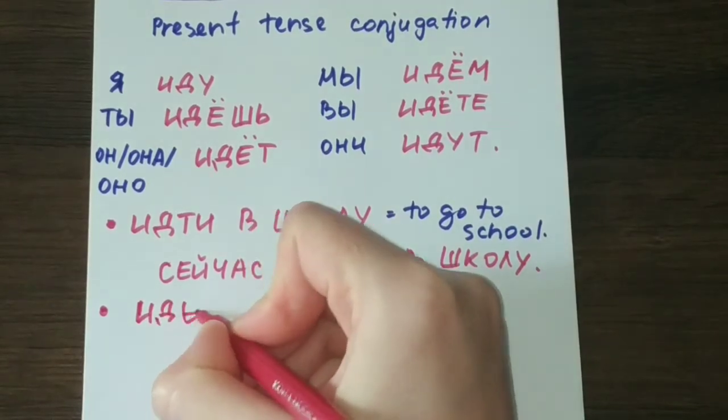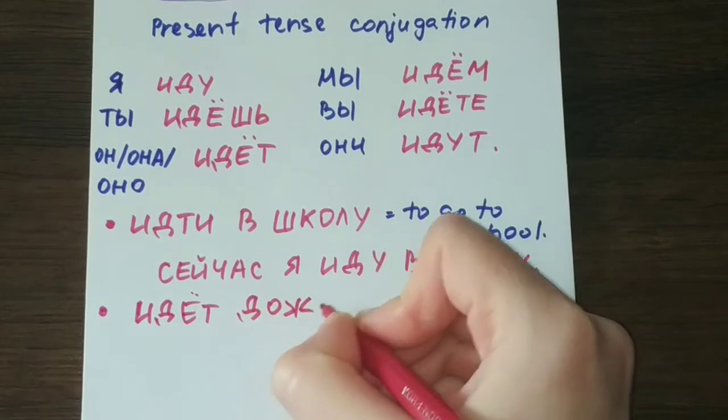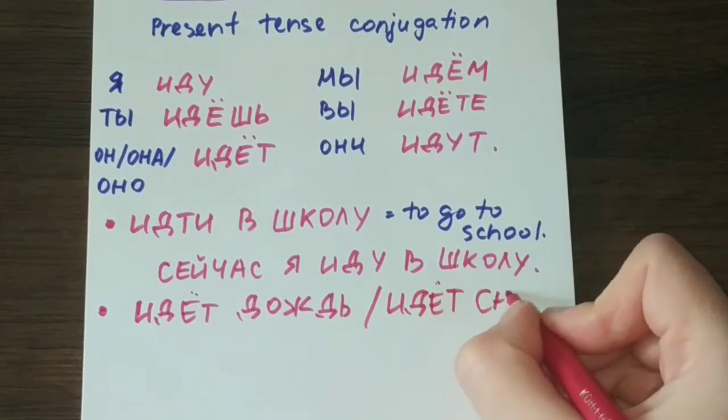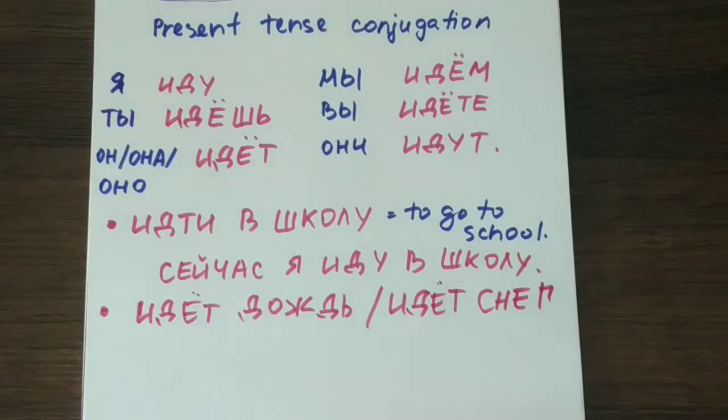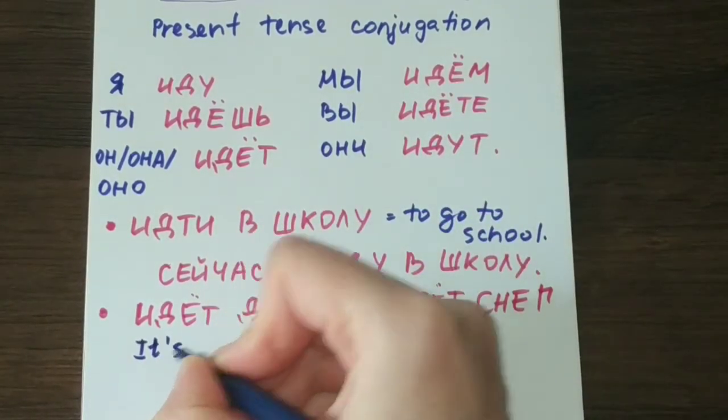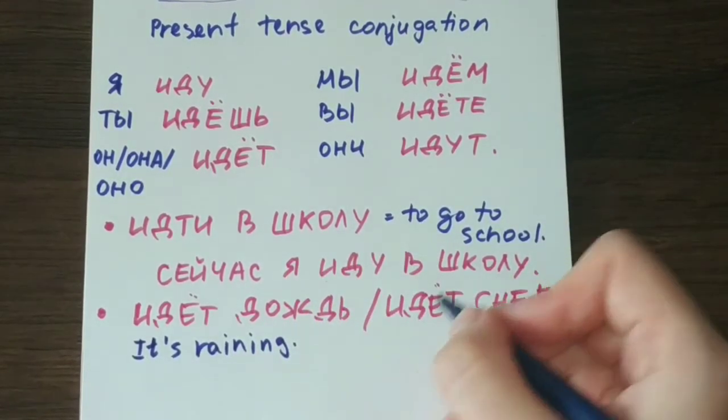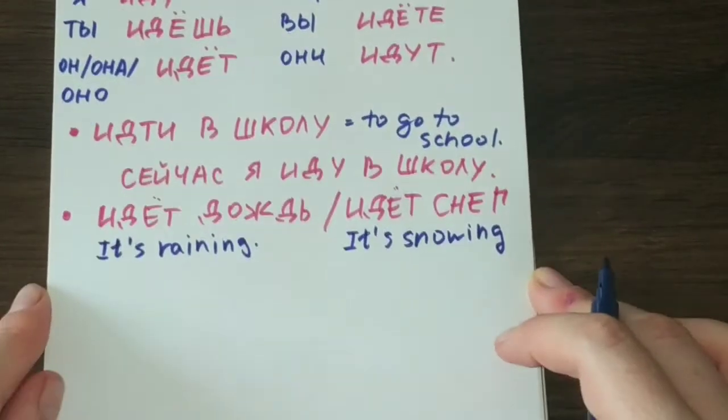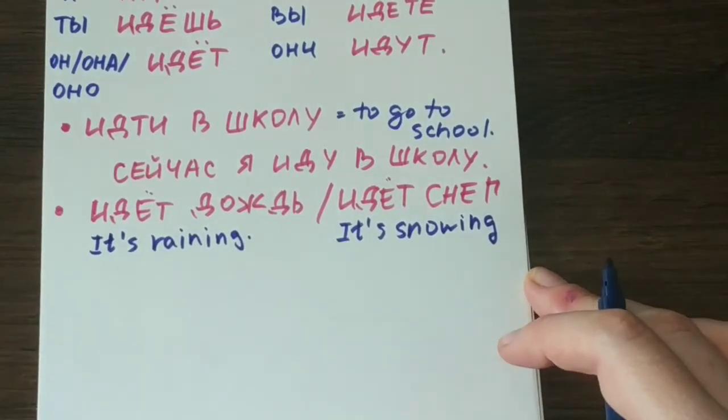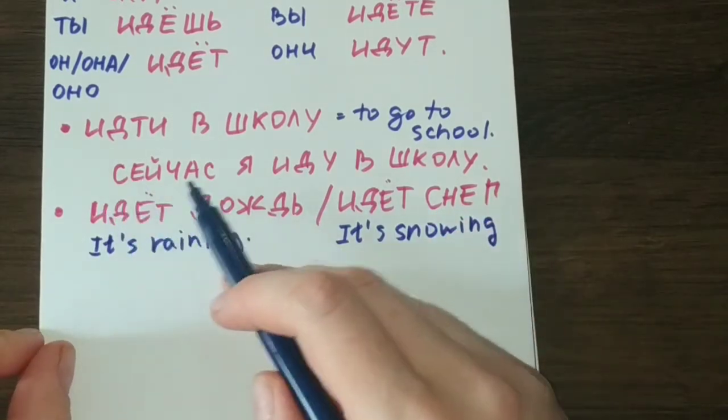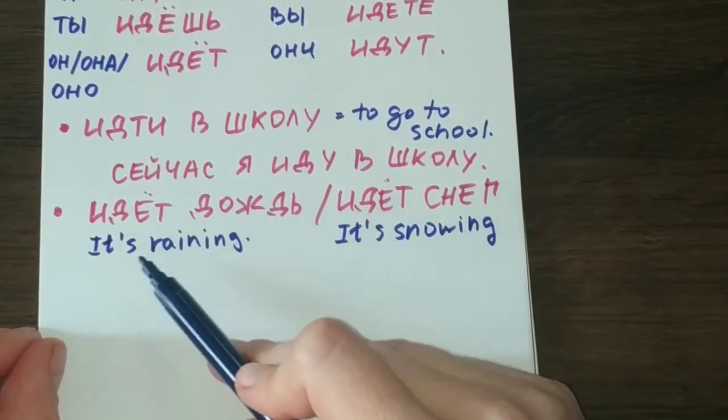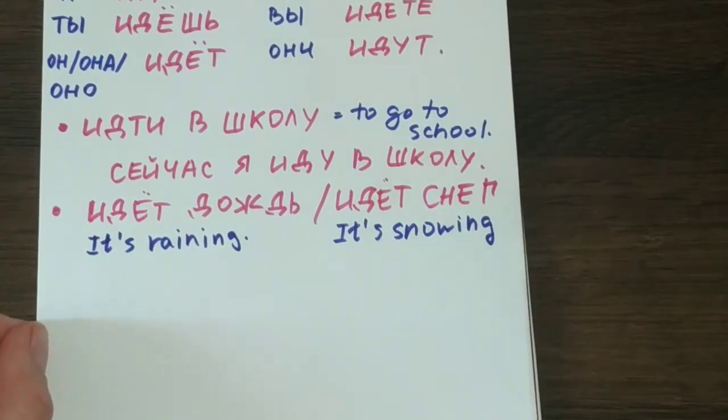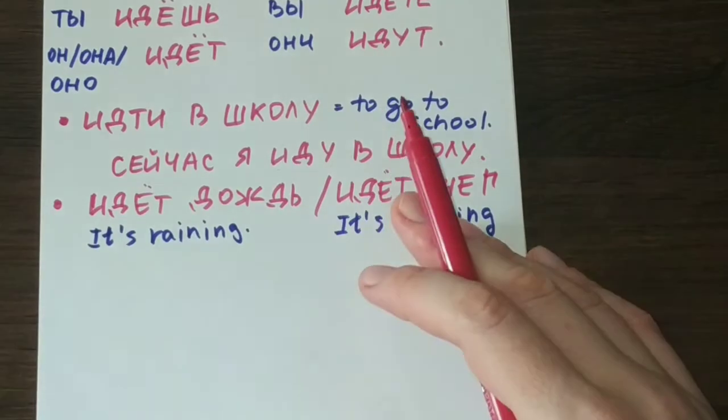Another very popular phrase that can be said with this verb is идёт дождь or идёт снег. That means идёт дождь means it's raining, and идёт снег means it's snowing. Of course, that means right now, right this moment. So that is another phrase that you can use with the verb идти. And you can add this word сейчас: сейчас идёт дождь, right now it's raining, or сейчас идёт снег, right now it's snowing. So that is an expression that will be very good for you to know and remember. You will see and hear it a lot in Russian speech and Russian texts.